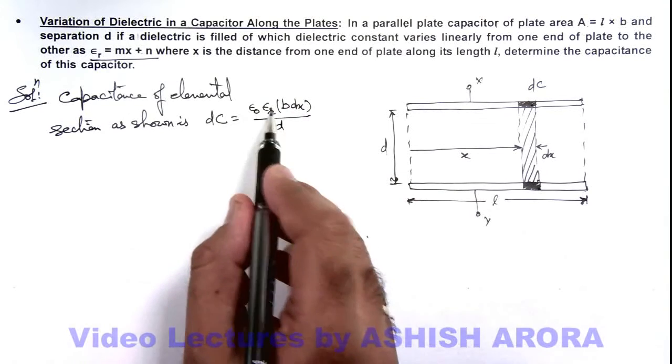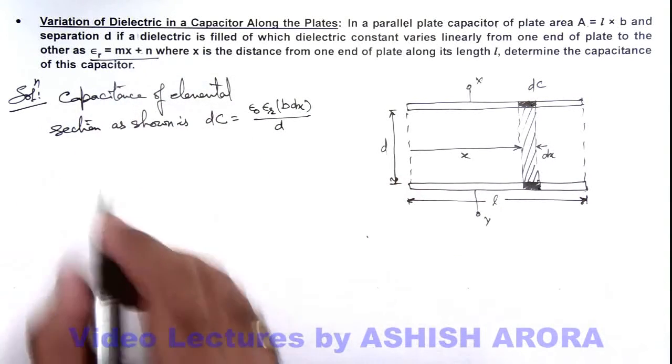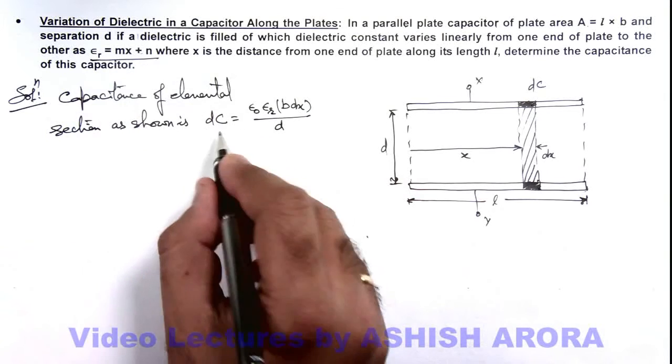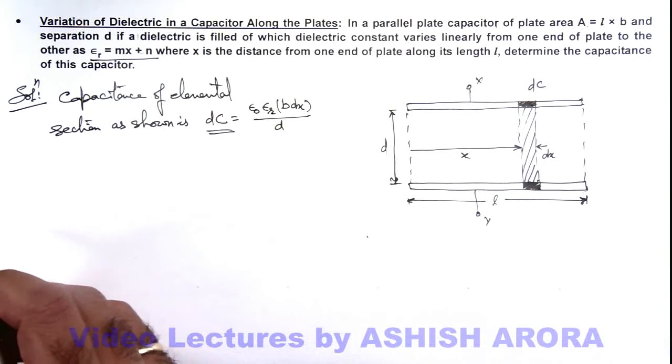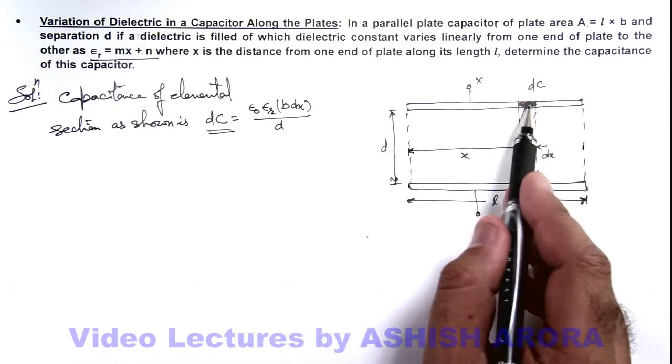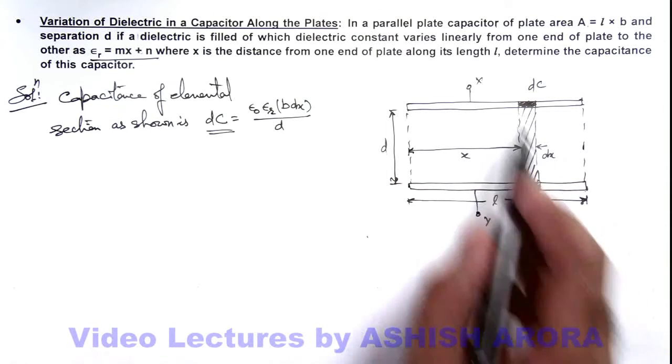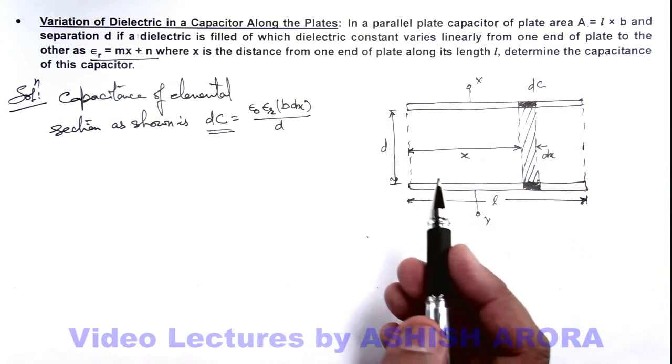And the value of εr within this element dx can be given by this relation, so here the value of dc is this. And between the values of x from zero to l, you can see all such dc's upper and lower plates are connected to each other, so all such dc's can be considered to be in parallel.